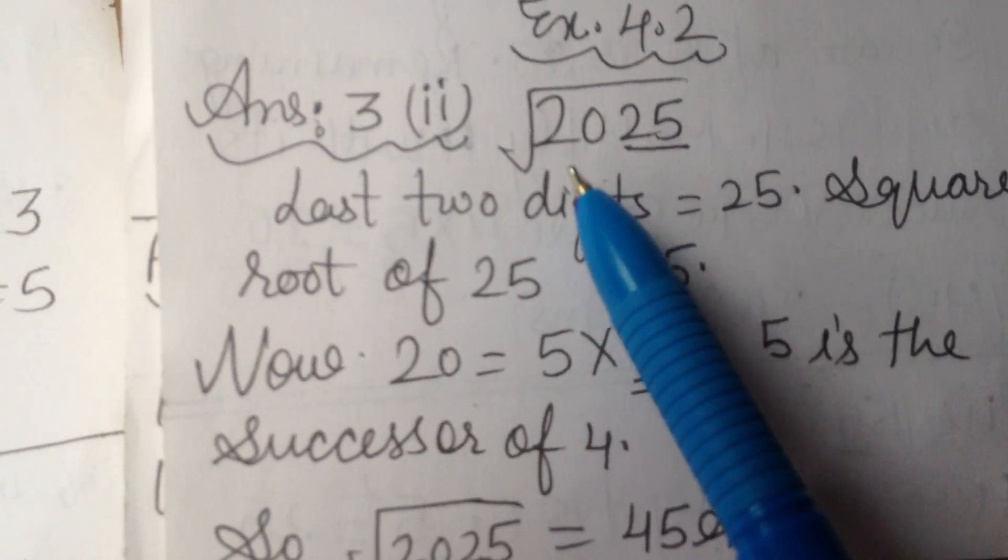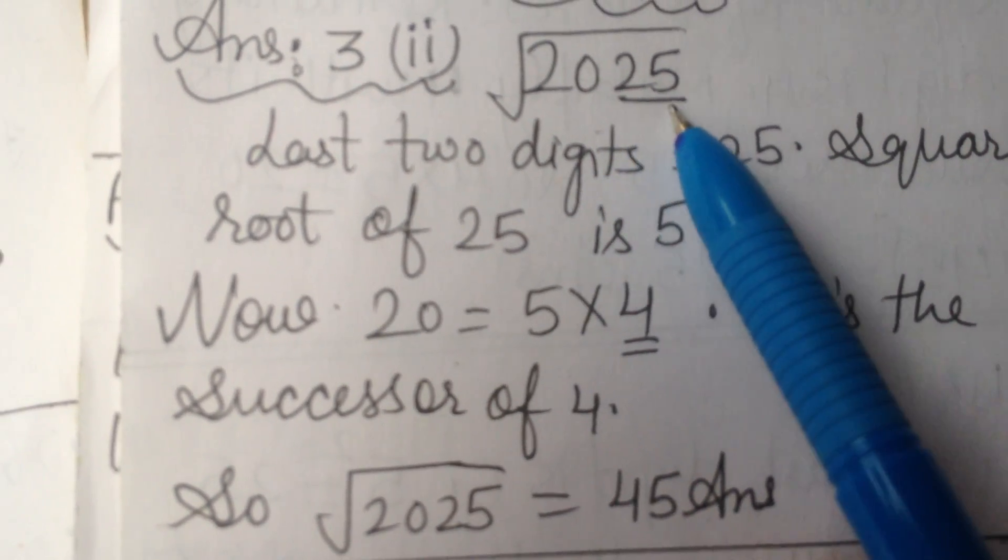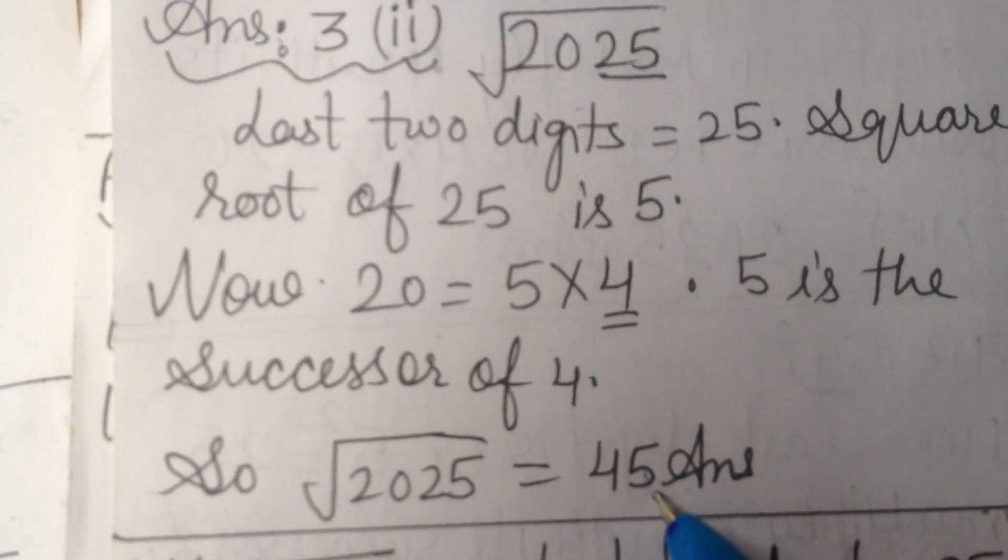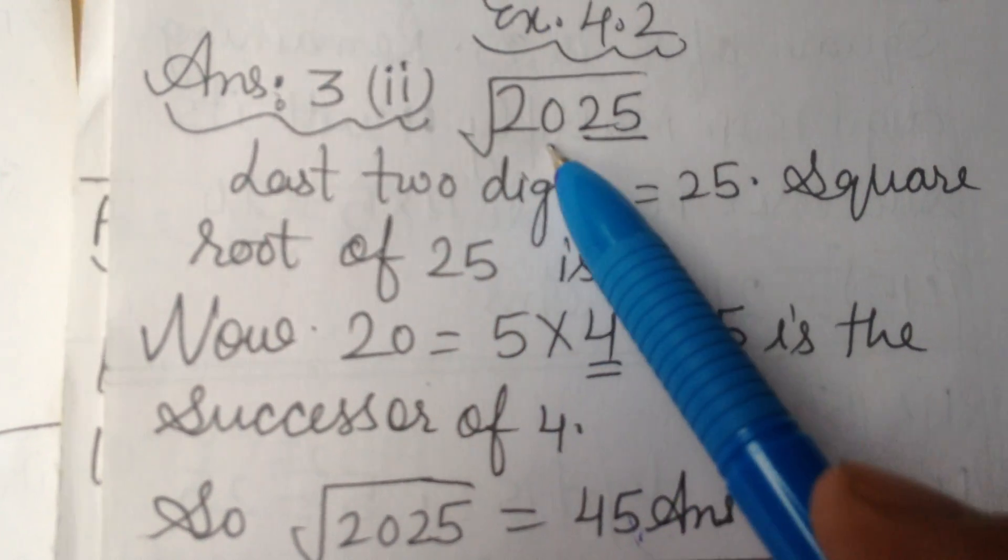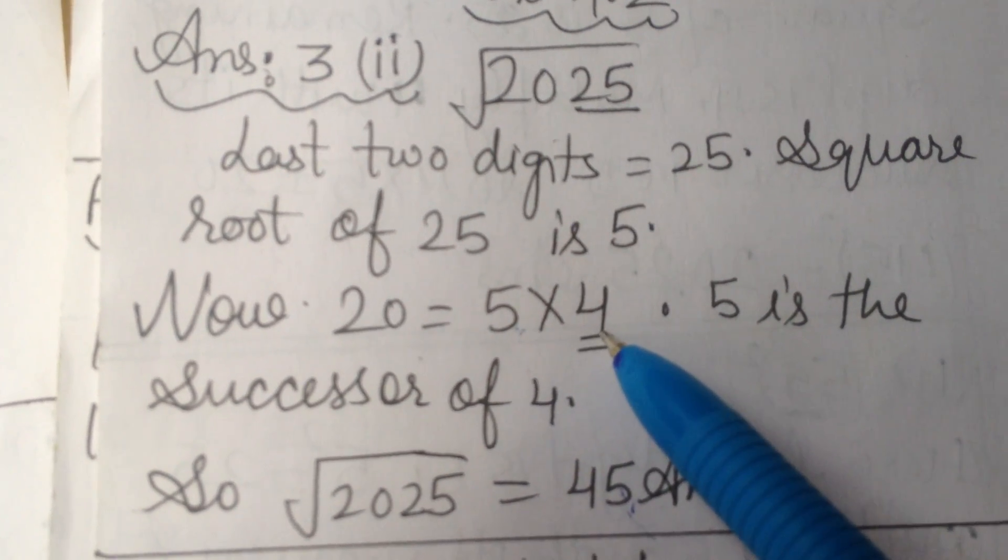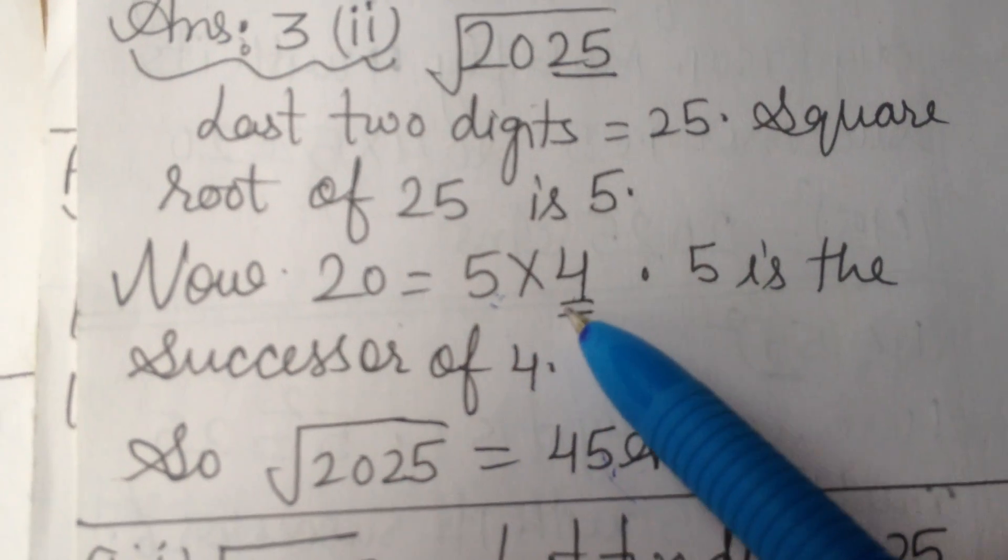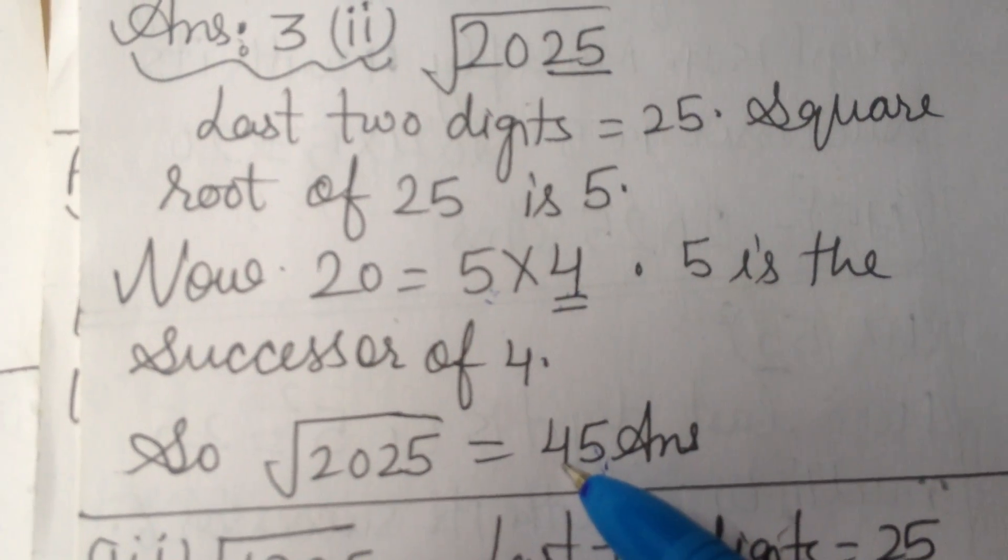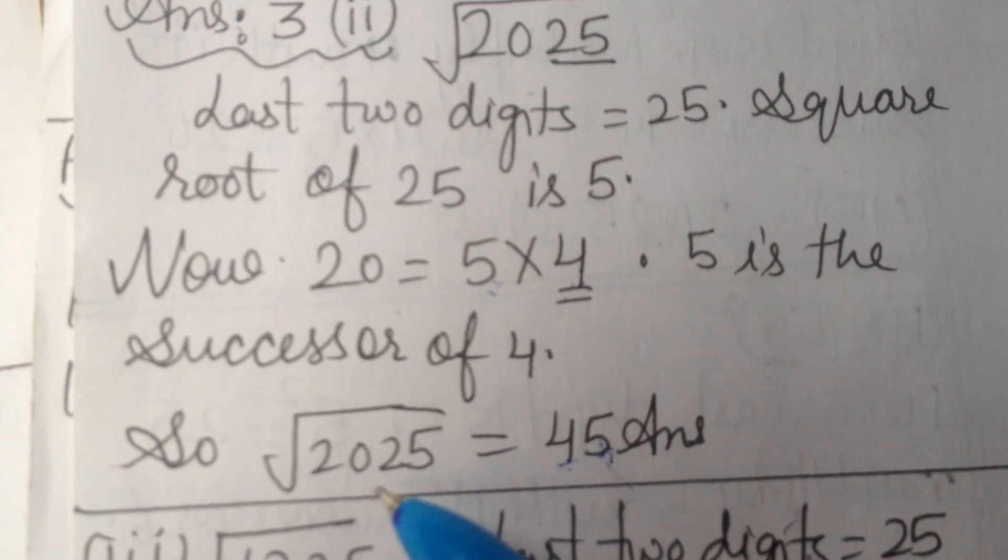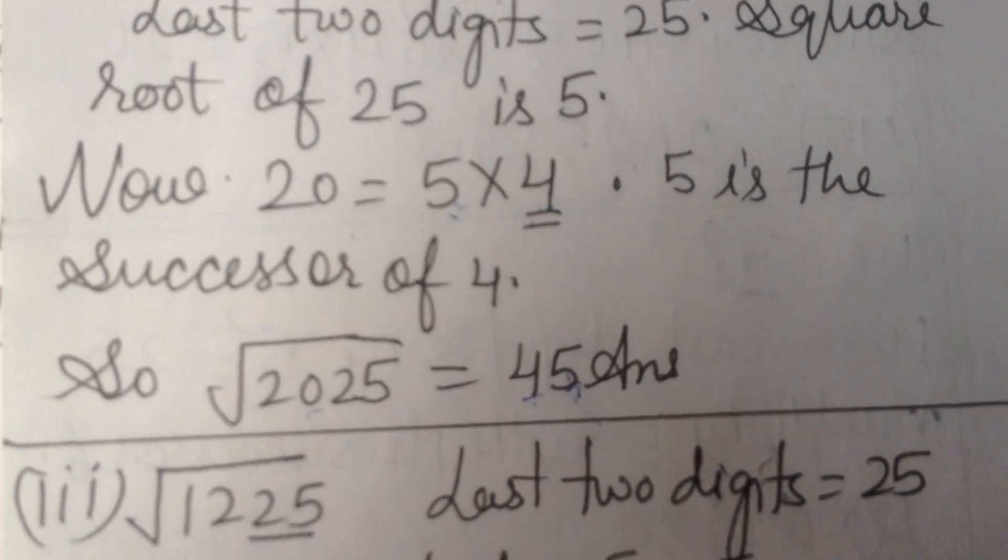Next question is 2025. Last two digits is 25. Square root of 25 is 5, so our last digit is 5. Now 20, we can write 20 as 4 times 5, 4 multiplied with its successor 5. So we take smallest number 4. This gives us 45. If we multiply 45 by 45, we will get 2025. Other sums you will try by yourself.